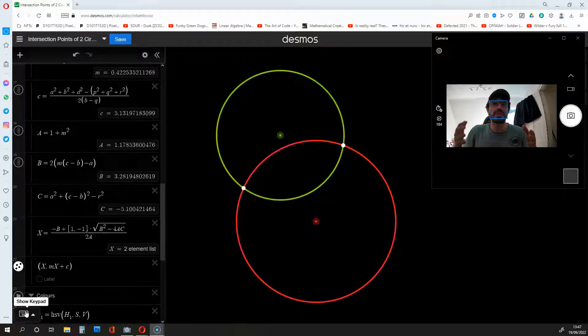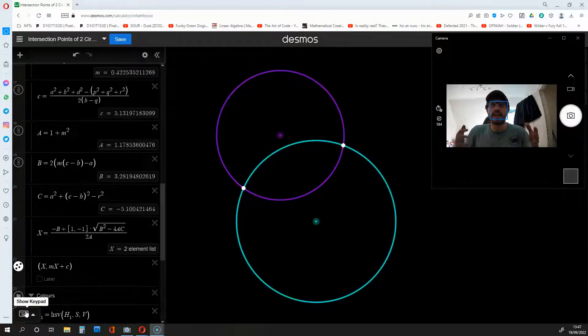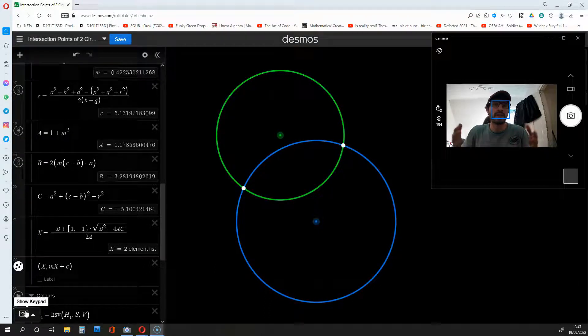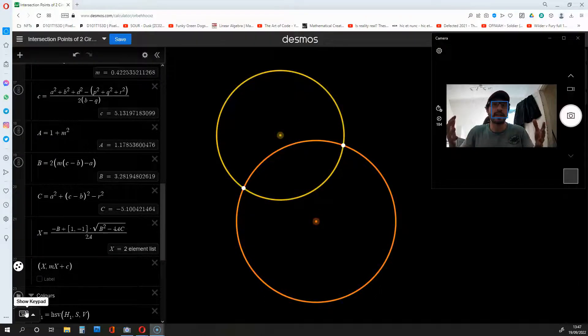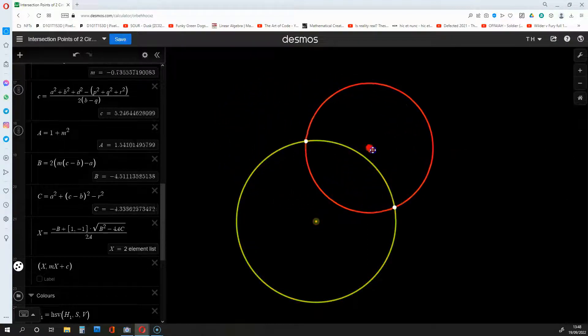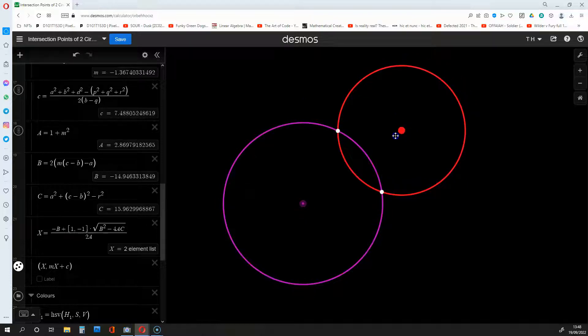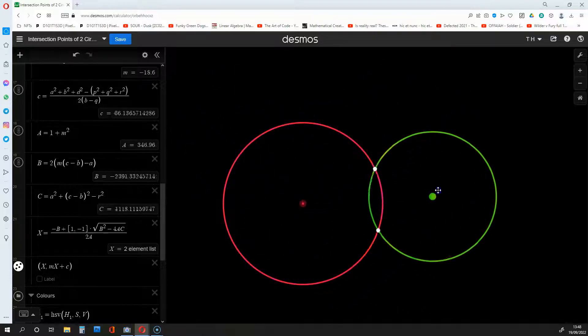Hi there, in this video I'm going to be showing you how to find the intersection points of two different circles with different radiuses. With the maths derived in this video, you will be able to replicate this graph right over here on Desmos.